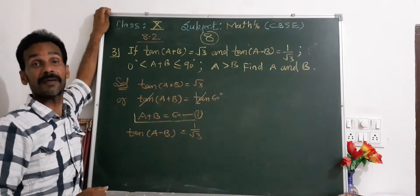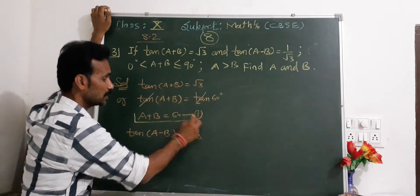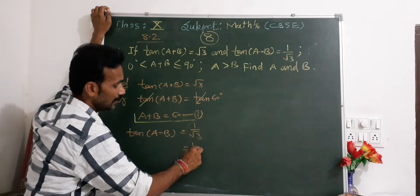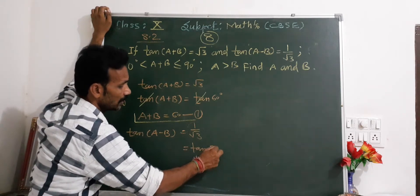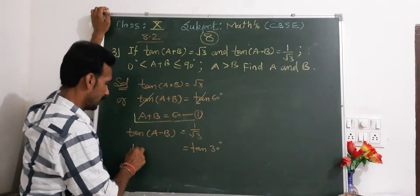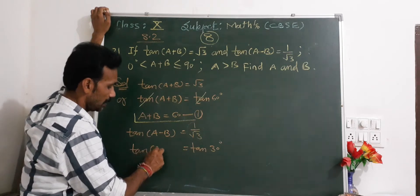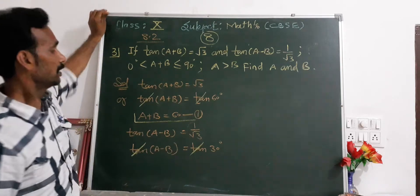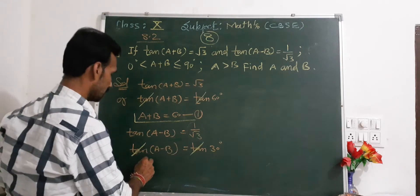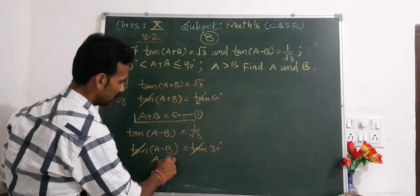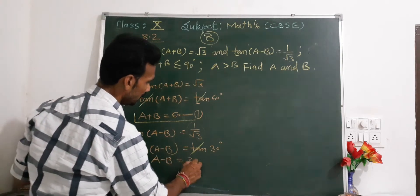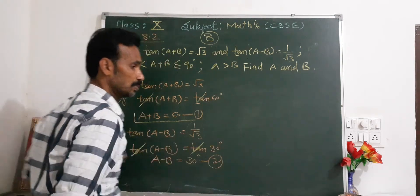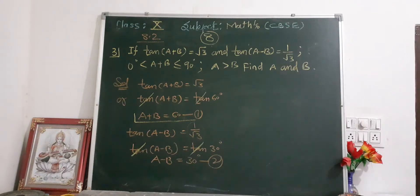Now for the second equation: tan(a-b) equals 1 upon root 3. We know that tan(30°) equals 1 upon root 3, so tan(a-b) equals tan(30°). The tan cancels, giving equation number two: a minus b equals 30 degrees.